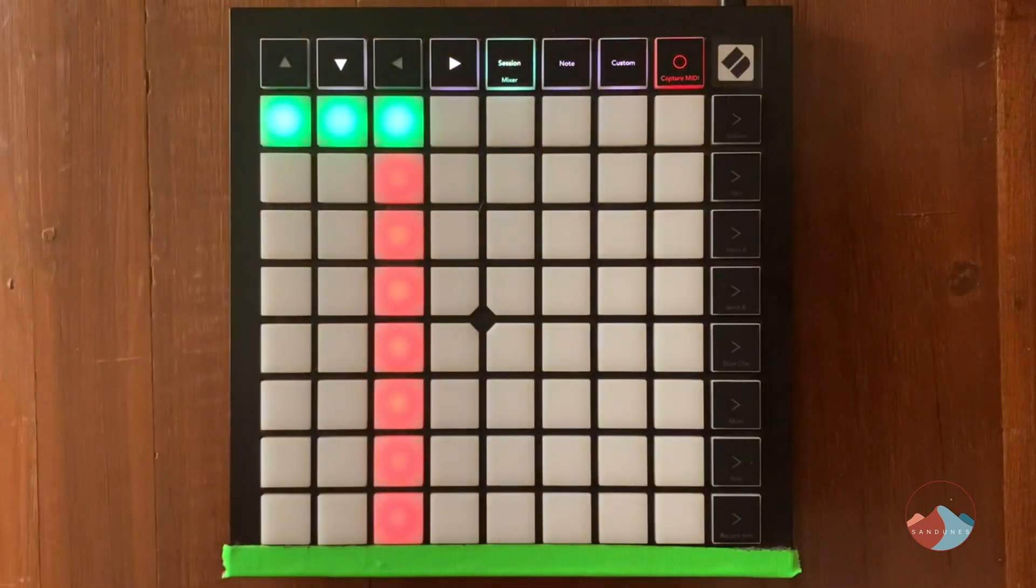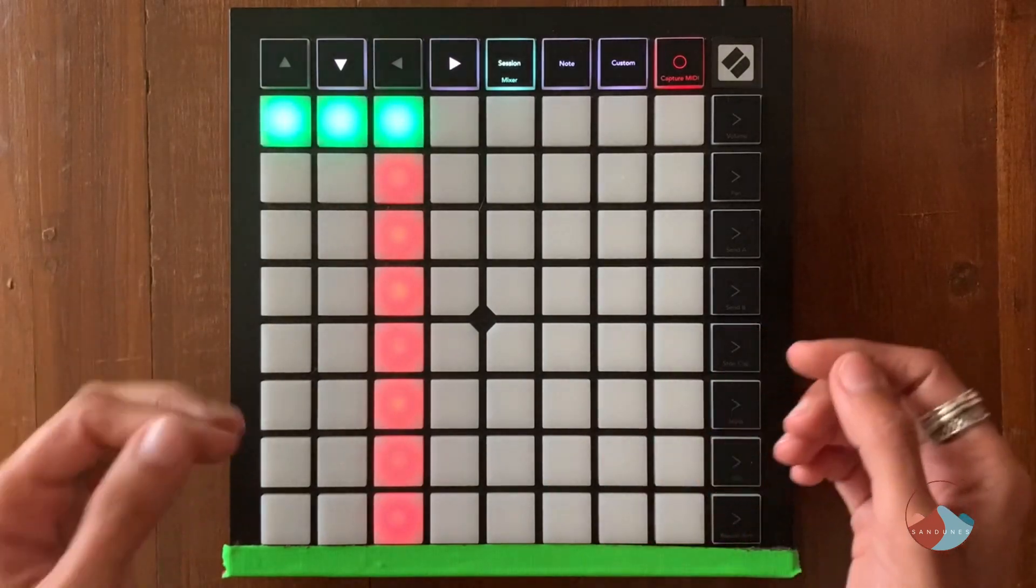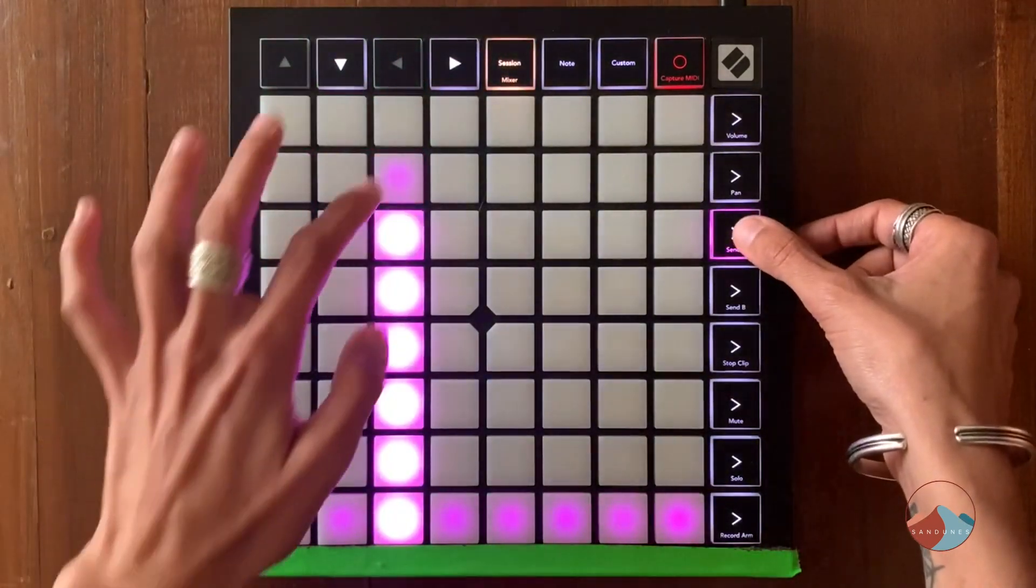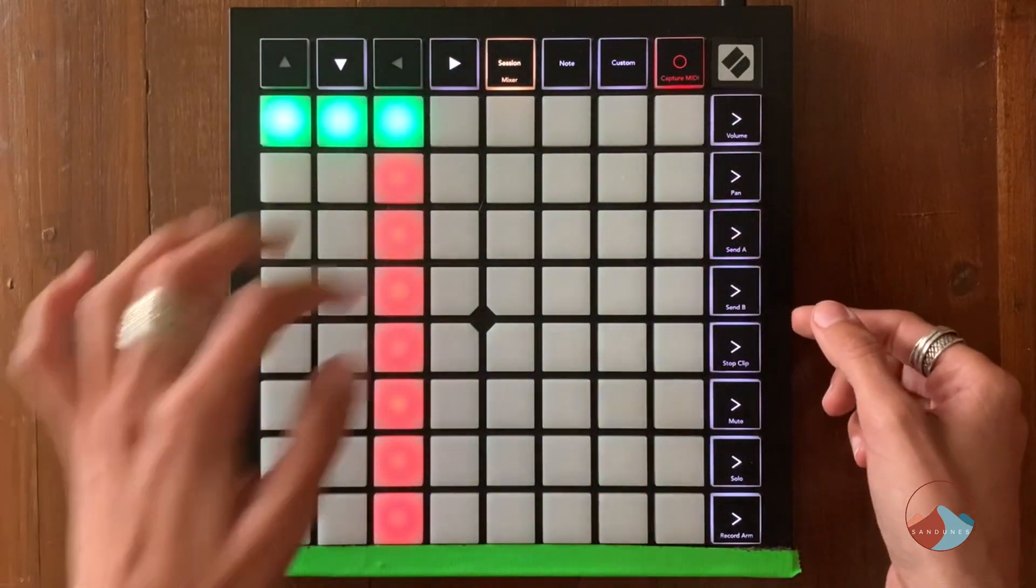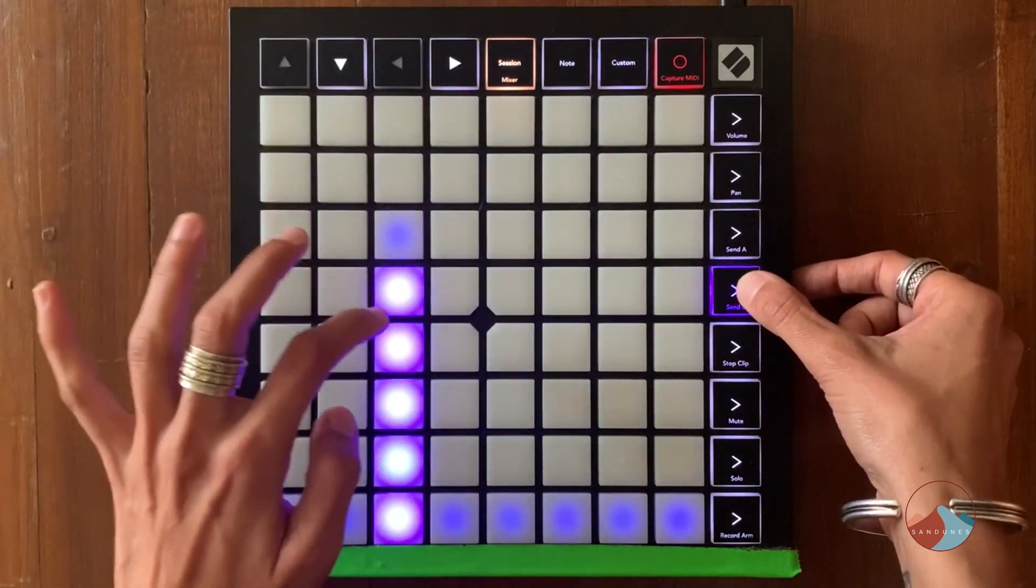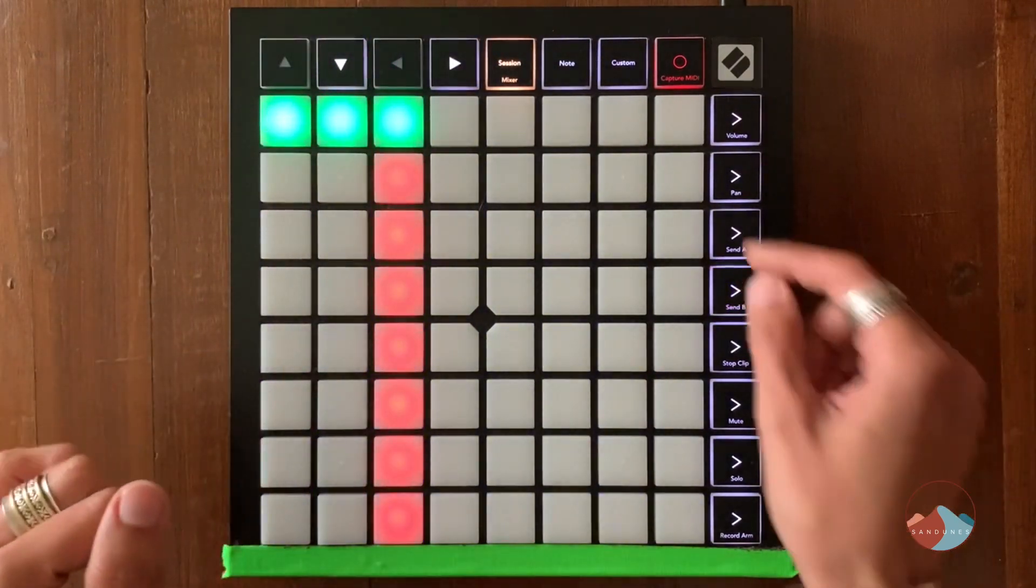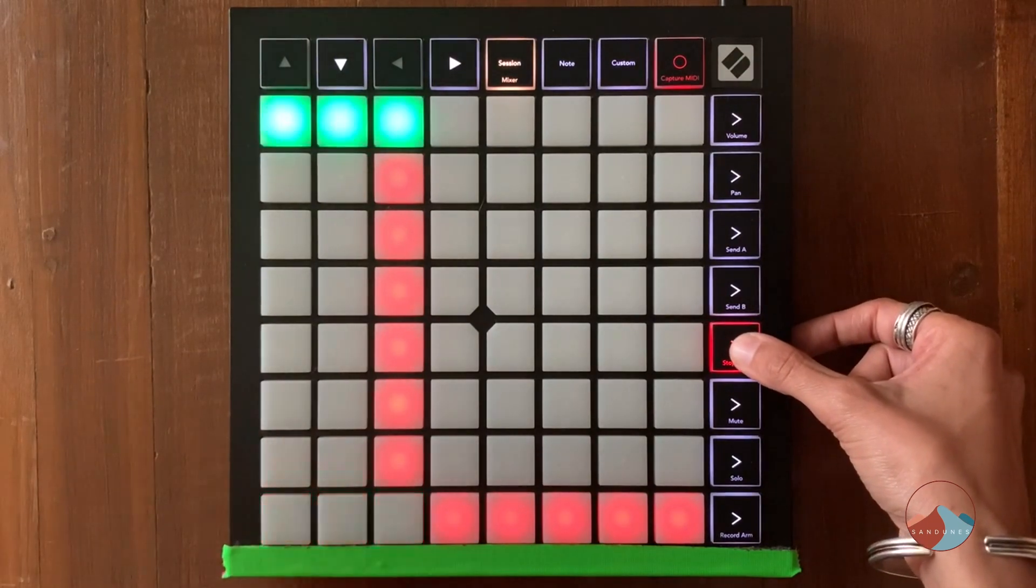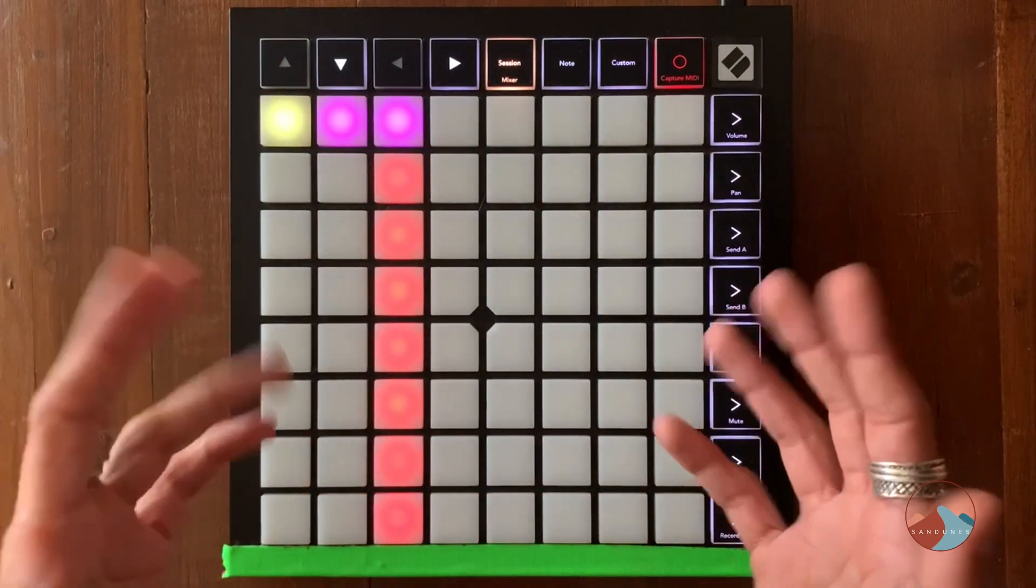Since I'm still working in the session view, I can go back into the mixer mode and play with the amount of the sends once the clips have already been recorded in order to achieve a wetter or a drier sound for the lead synths. And I can use the stop clip button to stop the loop.